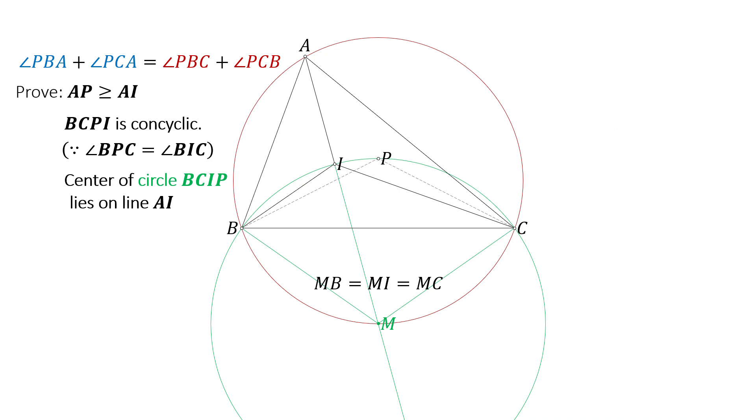Since AIM is a straight line, the length of AP plus PM must be greater than or equal to AI plus IM. PM equals IM as both are radii, so AP is greater than or equal to AI. The equality holds if and only if APM is a straight line, meaning P and I are at the same point. Therefore, we have shown that AP is greater than or equal to AI, with equality if and only if P equals I. This completes the proof.